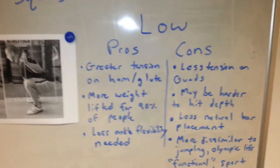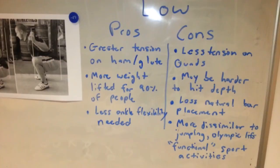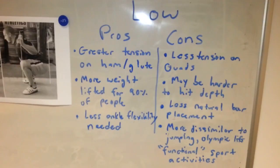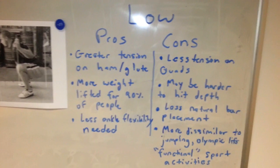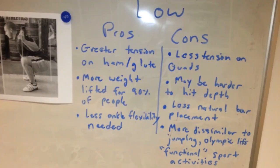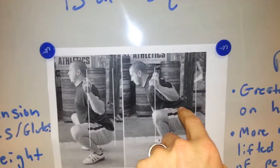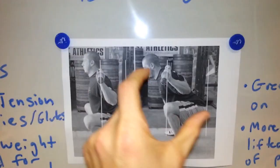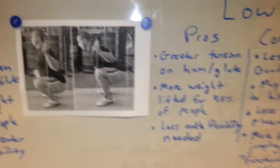On the other hand, the main pro of the low bar squat is that you can move more weight for most people, making it very attractive for powerlifters. It requires less ankle flexibility, though it does require you to really sit back to get the hips below parallel. Getting a rock bottom low bar squat is difficult — sometimes it may actually be harder to hit depth with a low bar squat, or at least takes more practice with the movement.